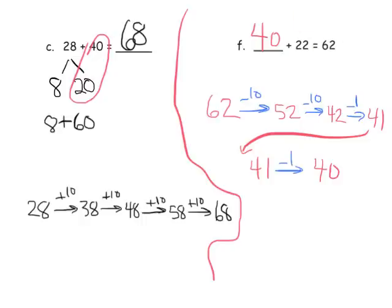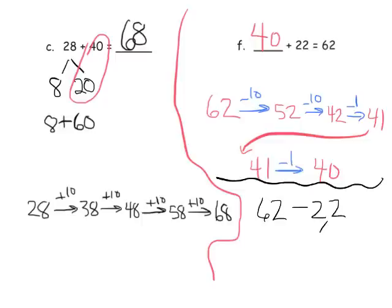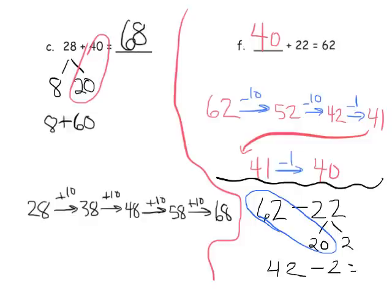We could also use the number bond method here, though students will learn this more formally later. For 62 minus 22, we do a number bond for 22 and get 20 and 2. So students can do: 62 minus 20 gives us 42, and then 42 minus 2 gives us 40.